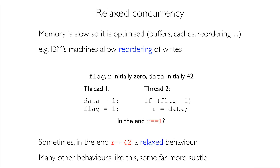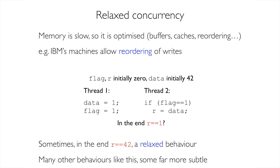Unfortunately, this is not really how real machines work. Real machines are subject to all sorts of strange optimizations. Memory is really slow, so we introduce buffers, reordering, and other tricks to make it go as fast as possible — but those things impact how your program executes. In particular, IBM machines will reorder writes. On our left-hand thread we have a data write and a flag write, and these can be freely reordered on an IBM machine. This breaks the assumption that if you see the flag variable, you will also see the data variable.